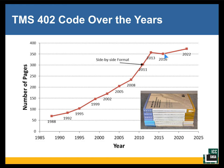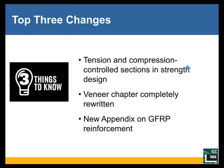We were not able to quite maintain that in 2022, but at least our slope is small. We did go to a six-year cycle — previously we had been on roughly a three-year cycle. I really respect all of you who have to keep up with so many different codes. The next edition will be 2028. The three biggest changes are the introduction of tension-compression controlled sections in strength design, a completely rewritten veneer chapter, and a new appendix on glass fiber reinforced polymer reinforcement.